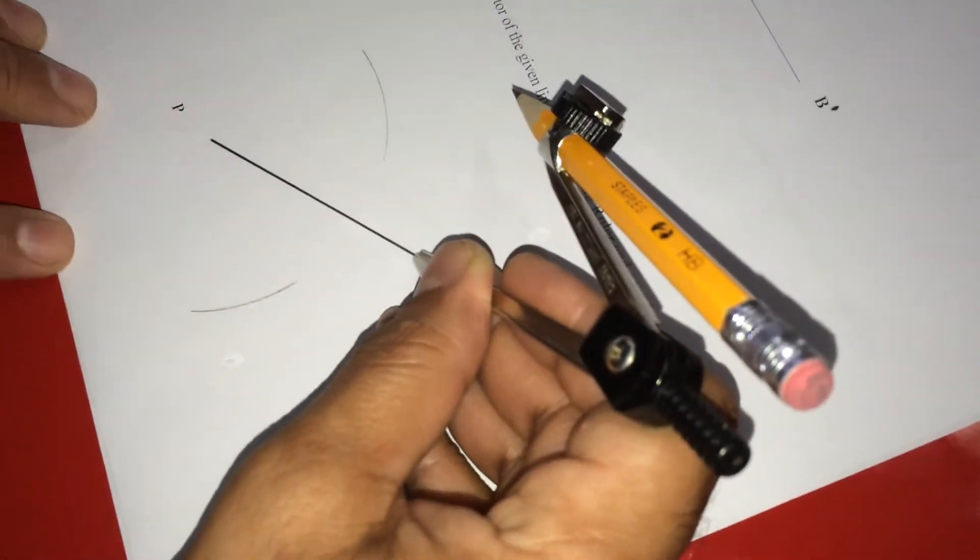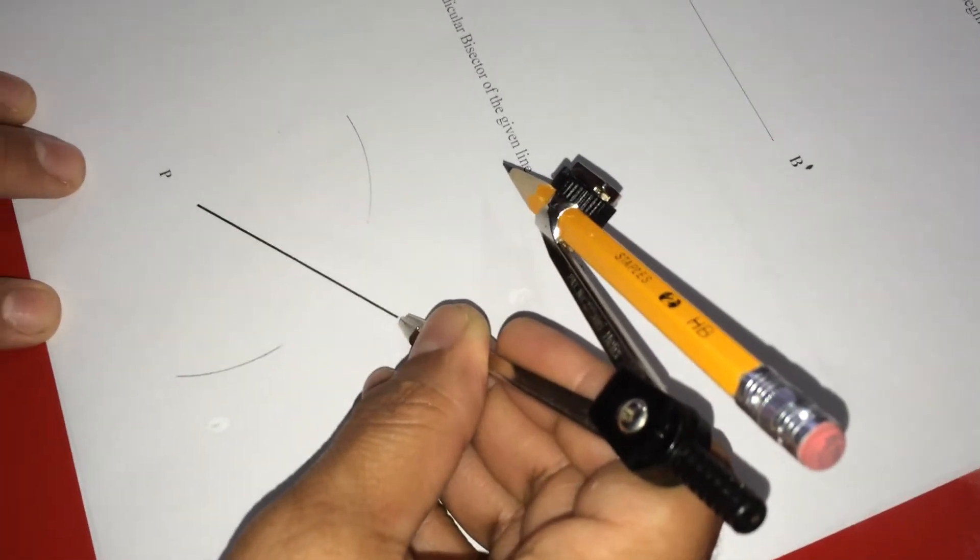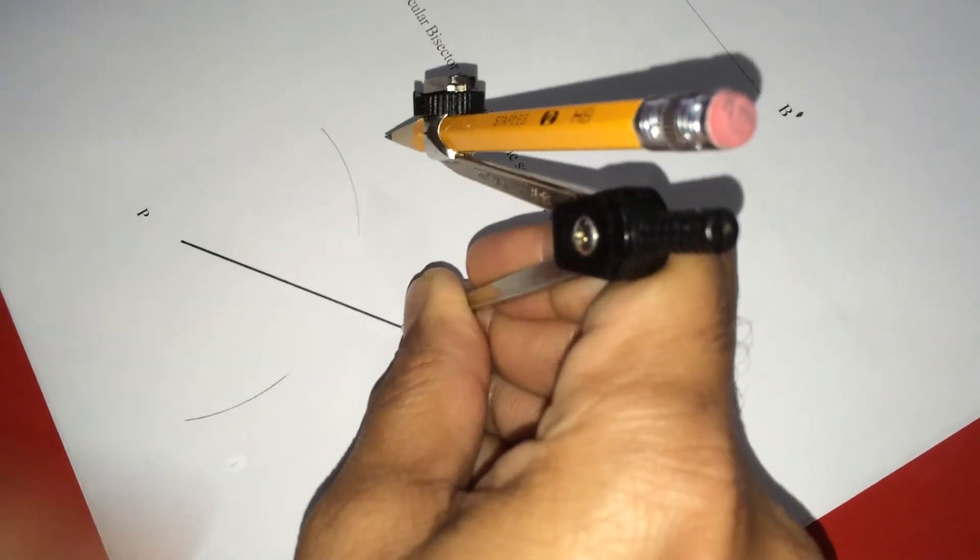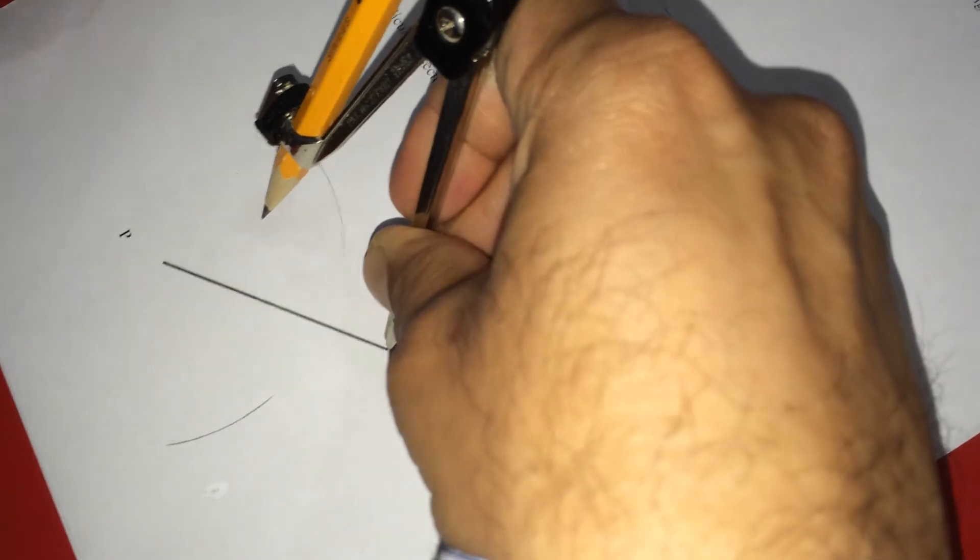Then lift it up. This time, without disturbing this radius, take Q as center. So with the same radius, draw two more arcs to cut the previous two arcs. See like this. So this is the first one here.